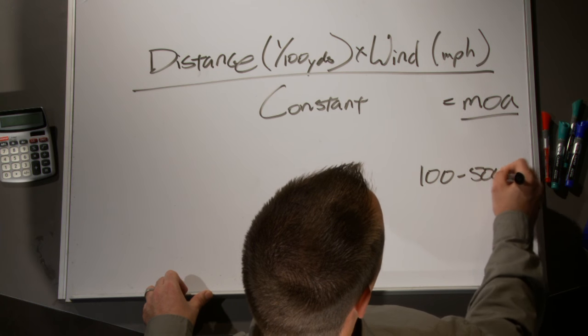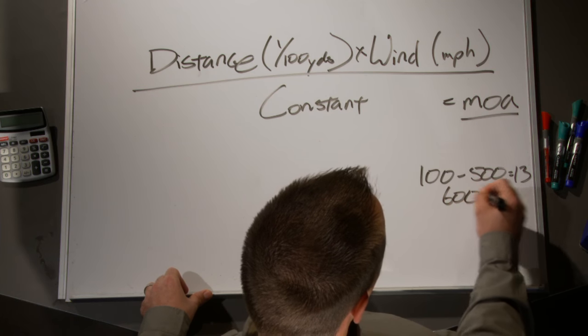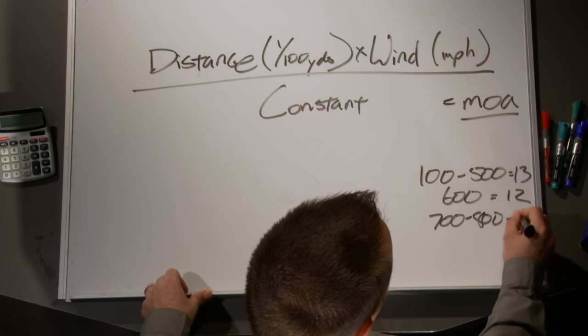This formula is set up to work for the .308 round coming out of a sniper rifle. The constant changes with distance: from 100 to 500 yards, use a constant of 13; at about 600 yards, use 12; from about 700 to 800 yards, use 11; and 900 yards and beyond, use a constant of 10. So it's not really constant — it changes — but these are the values you can use.